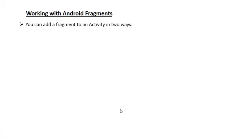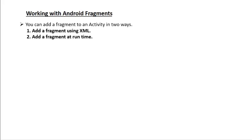Now we can learn how to add a fragment to an activity. You can add a fragment to an activity in two ways. The first way is to add a fragment directly to the XML layout file. The second way is to add a fragment at runtime. If you want to add, remove, or replace a fragment at the activity runtime, you have to add the fragment programmatically. Let's learn each of these, starting with how to add a fragment using XML.